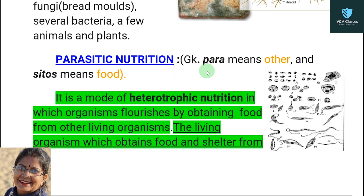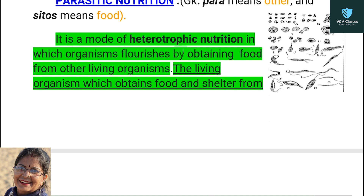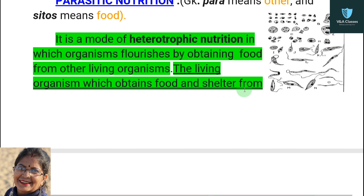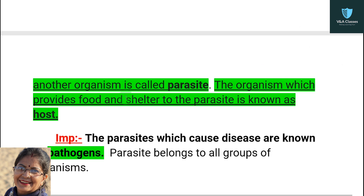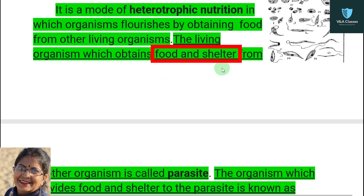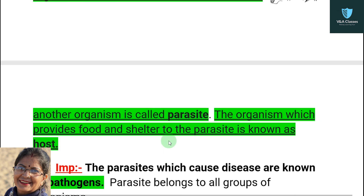Next is parasitic nutrition. This term also comes from Greek: 'para' means other and 'cytos' means food. It is a mode of heterotrophic nutrition in which an organism flourishes by obtaining food from other living organisms. In this type, organisms depend on others for their food. The living organism which obtains food and shelter from another organism is called a parasite.